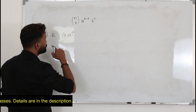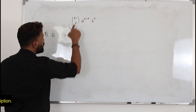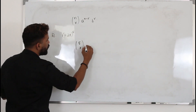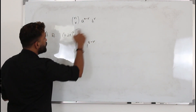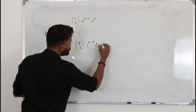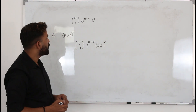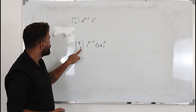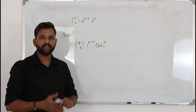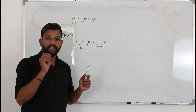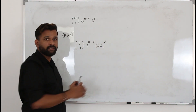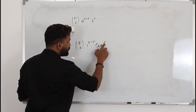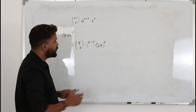We are going to use the general term to find the coefficient of x³. Here n is 5, r we don't know yet. A is the first term, 1^(5−r); B is the second term. I've taken the general term and replaced n by 5, a by the first term, and b by the second term. Now they want the coefficient of x³, so the power of x has to be 3.